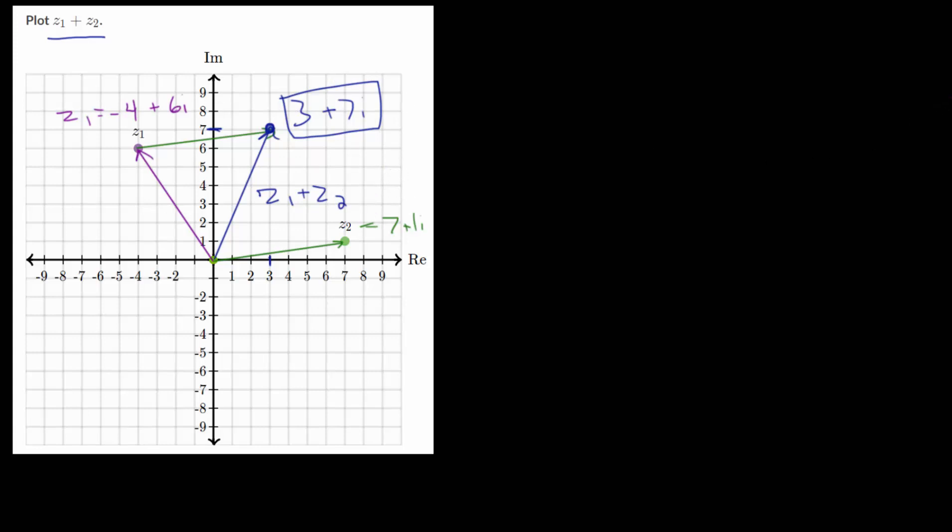Now let's do one final problem. For this one, we are subtracting Z1 minus Z2. Let's start by writing both of these complex numbers in terms of their real and imaginary parts. Z1 looks to be at 4 plus 4i, while Z2 looks to be at 4 for the real part and minus 4i for the imaginary part.